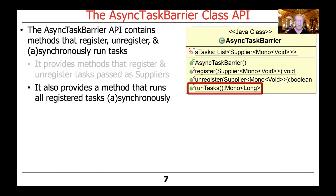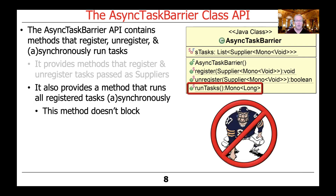The most important method, however, is arguably the run tasks method. It provides a method that runs all the tasks that have been registered either synchronously or asynchronously, depending on how they're implemented and how get returns and invokes the computation passed in as a parameter to register. This method returns a Mono to long, meaning it won't block — it'll simply let the operations continue and then eventually emit a value, so you can use it in a wholly asynchronous and reactive way.